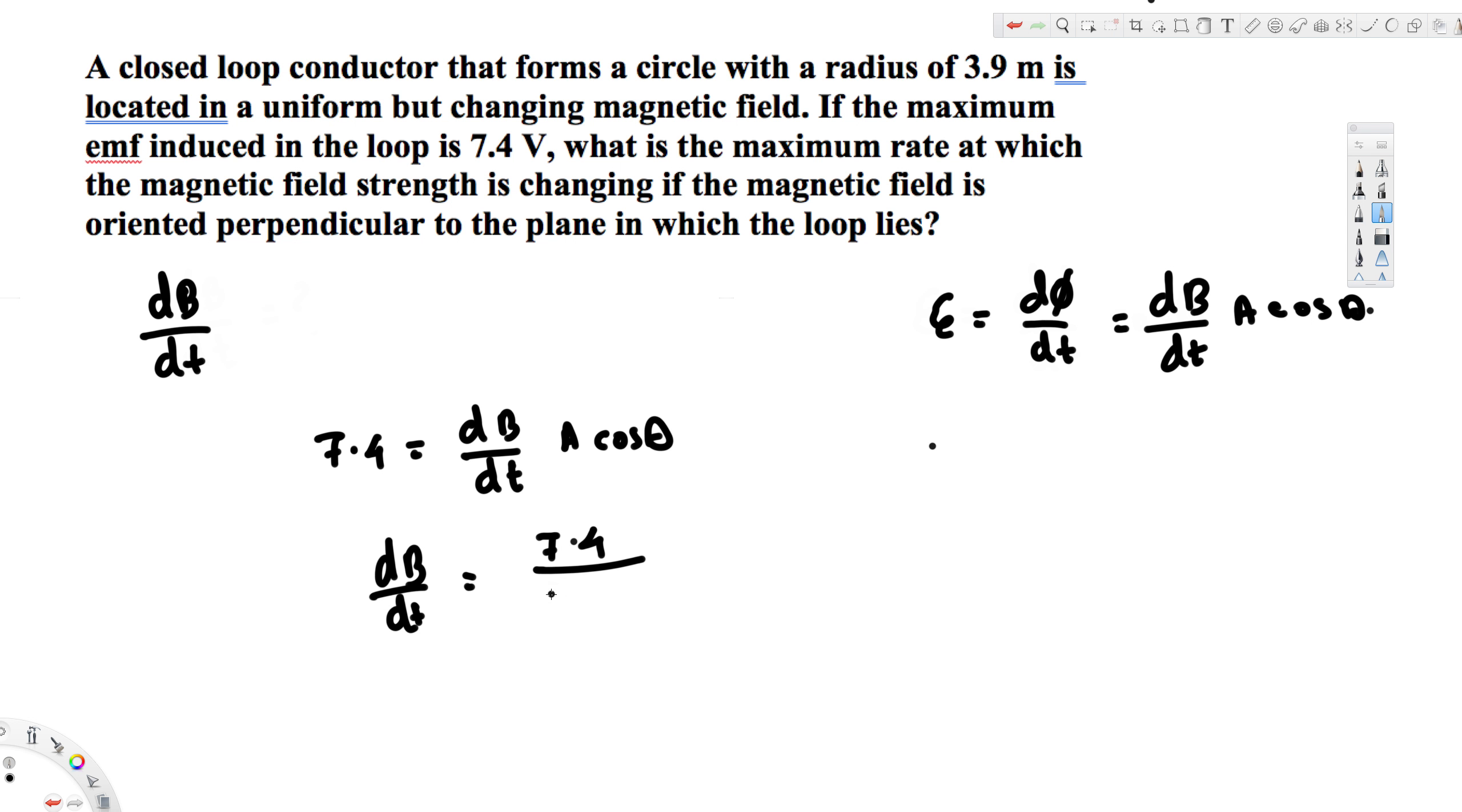So that's going to be π times r squared, not 4π r squared, just π r squared times cos theta. But since the question mentioned this is perpendicular, we can say sin 90 degrees.